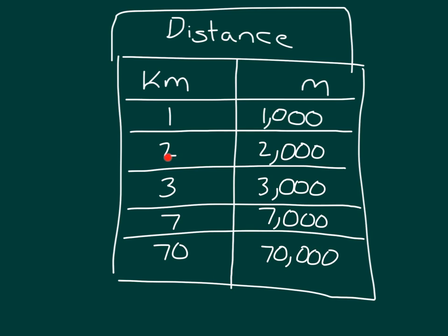1 kilometer to 1,000 meters, 2 kilometers for 2,000 meters, 3 kilometers equaling 3,000 meters, 70 kilometers equaling 70,000 meters, or 1,000 times more. 1 kilometer is 1,000 times as much as 1 meter. We're going from a larger unit to a smaller unit. That's why we have to have more of them.